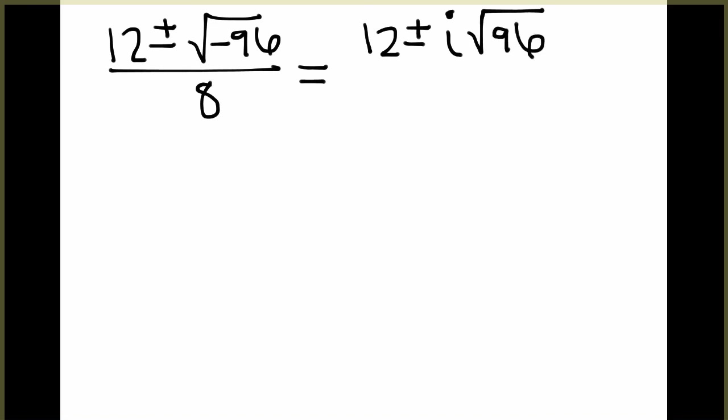I typically just rewrite the expression like this, 12 plus or minus i square root of 96, and still over 8. Now, I'm just going to talk about finding an approximate solution, not worrying so much about the exact solution and the exact simplification.